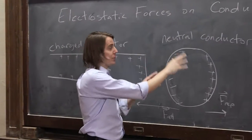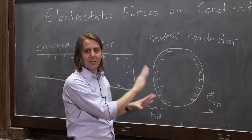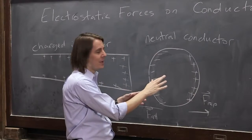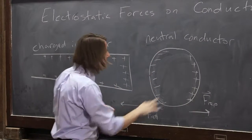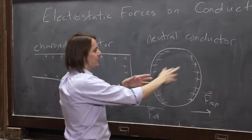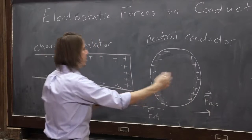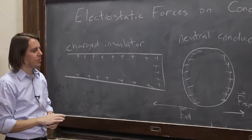The conductor can become charged, and that can change things — so keep in mind, you can charge a conductor. But a neutral conductor, where all that's happening is charge rearranging, will always rearrange in a way to be attracted to a nearby charge.